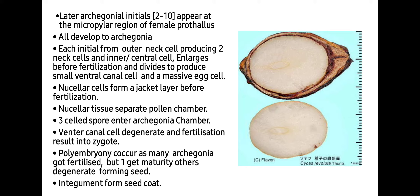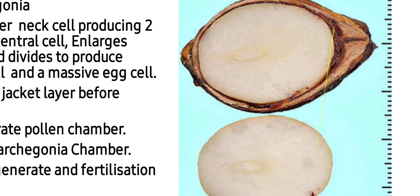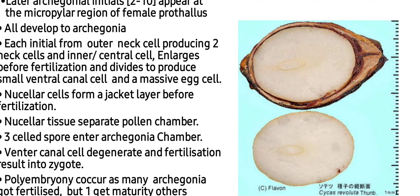Polyembryony may occur as many archegonia get fertilized, but only one reaches maturity and the others degenerate. The integument forms the seed coat. Here you can see the structure of the seed.